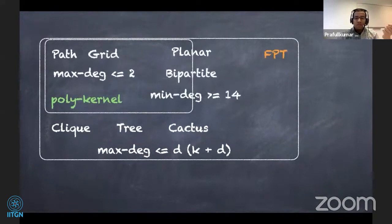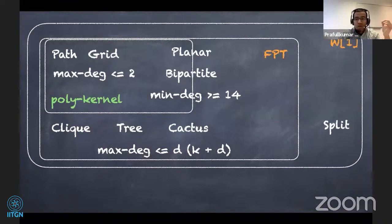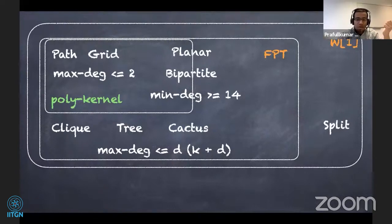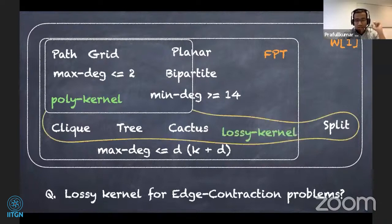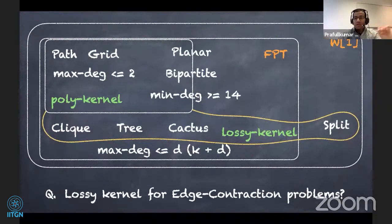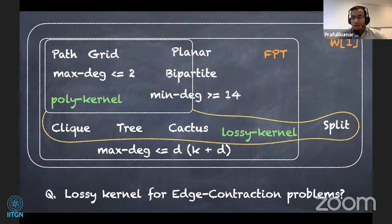Coming back to this picture, this is what we know. As you have seen in the last two lectures, let's add the set of W[1]-hard problems, and let's add split contraction here. As you have seen in the last two talks, it is natural to ask: does there exist a lossy kernel of polynomial size for edge contraction problems? The answer is yes — we can compute a lossy kernel for clique contraction, tree contraction, and cactus contraction.